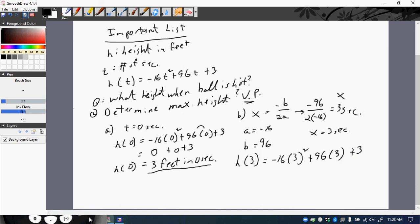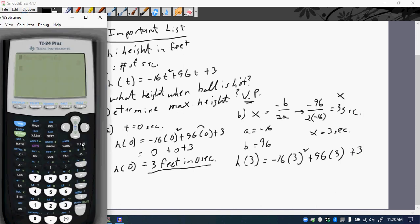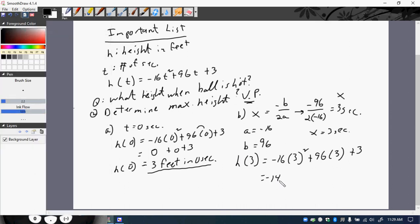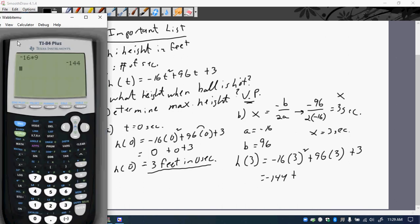So go to my calculator. I know that 3 squared is 9, so I'm going to go negative 16. So I'm going to go negative 144 plus, right?